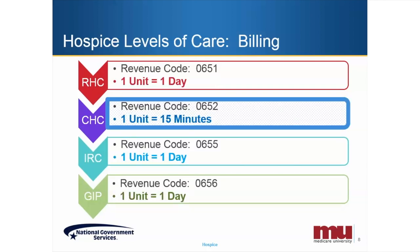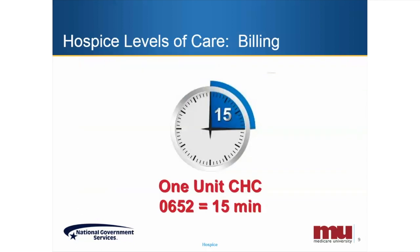It is also important to understand the units for each revenue code utilized. Routine home care, inpatient respite care, and general inpatient care are all billed on a per-day basis, meaning that the hospice provider would bill one unit for each day of service. However, continuous home care is not billed per day, but instead is billed in 15-minute increments, meaning that for each 15 minutes, or any portion of 15 minutes over 8 minutes, one unit is billed per 15 minutes. The CHC level of service is reported in 15-minute increments, therefore this code will have to be reported daily to show the amount of time for CHC.